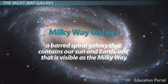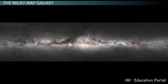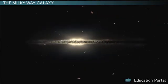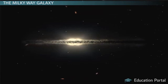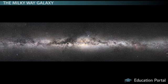The Milky Way galaxy is a barred spiral galaxy that contains our Sun and Earth. It is visible as the Milky Way — a wispy band of light made by the glow of our galaxy's stars that stretches across the sky. It's best seen when it's very dark outside and no light pollution is present from nearby cities or street lights. The Milky Way encircles us, and we see it basically as an edge-on view of our galaxy, meaning we are looking at it from within the plane of our galaxy. This is the reason it appears as a band around the sky.